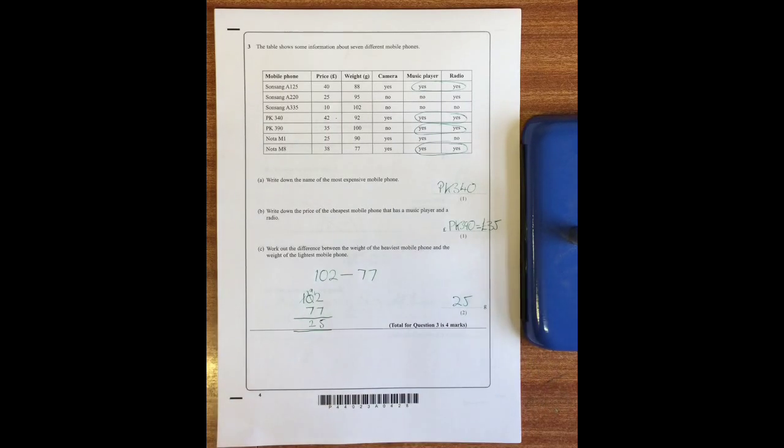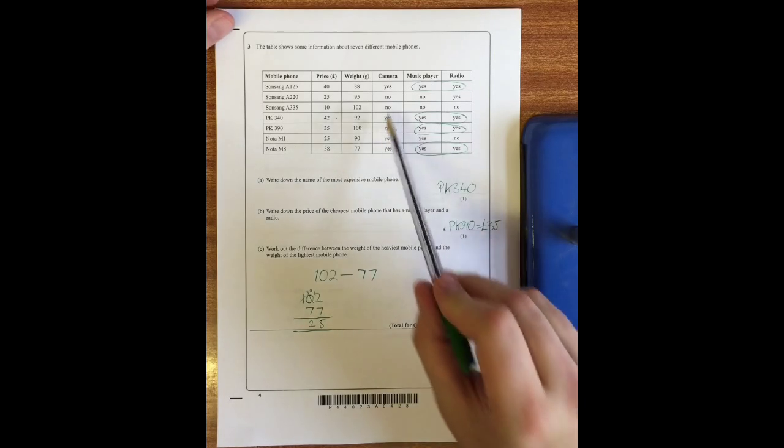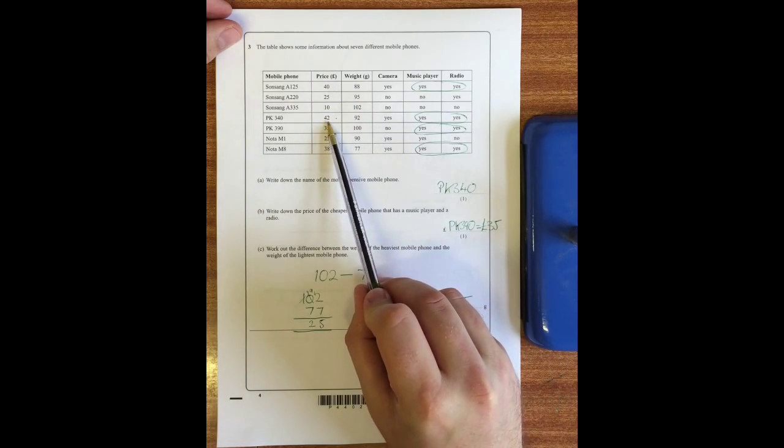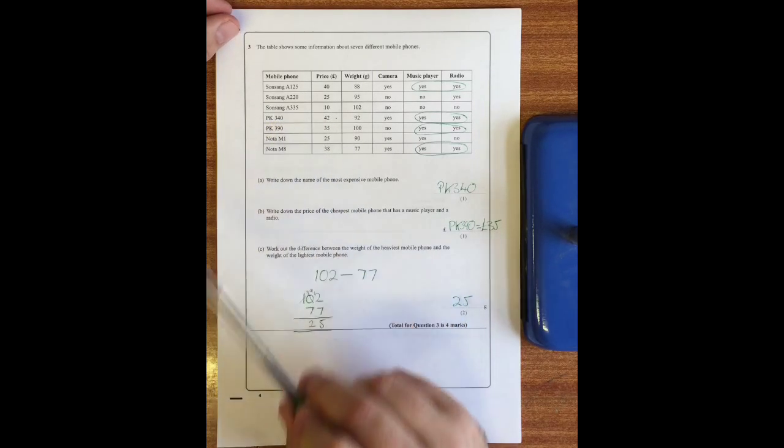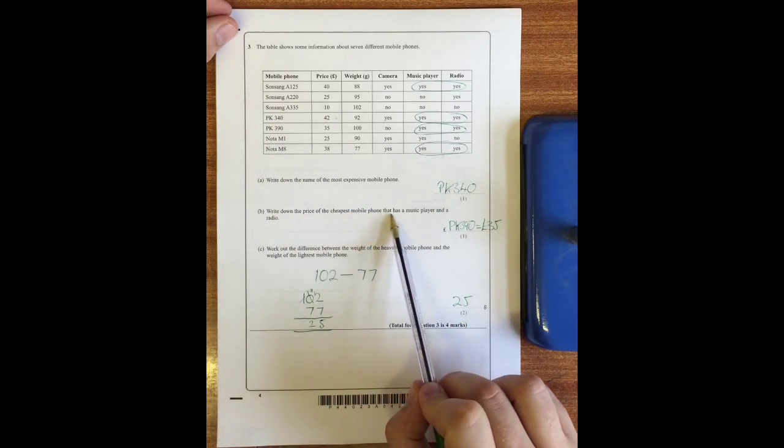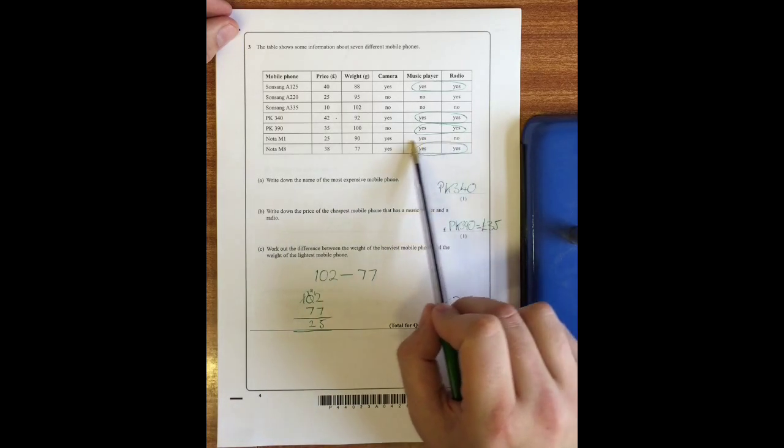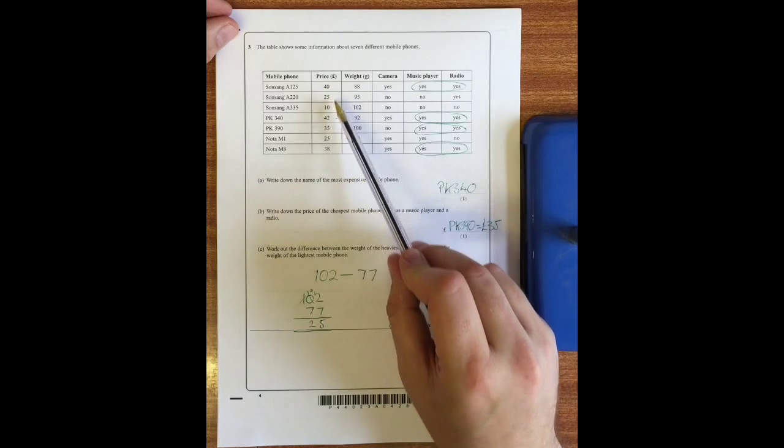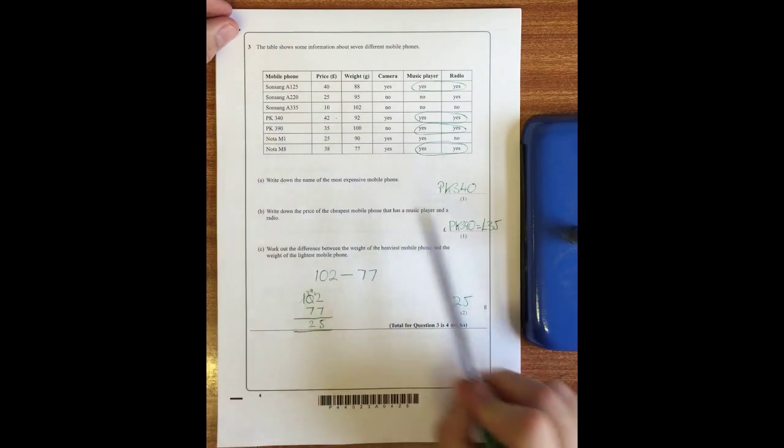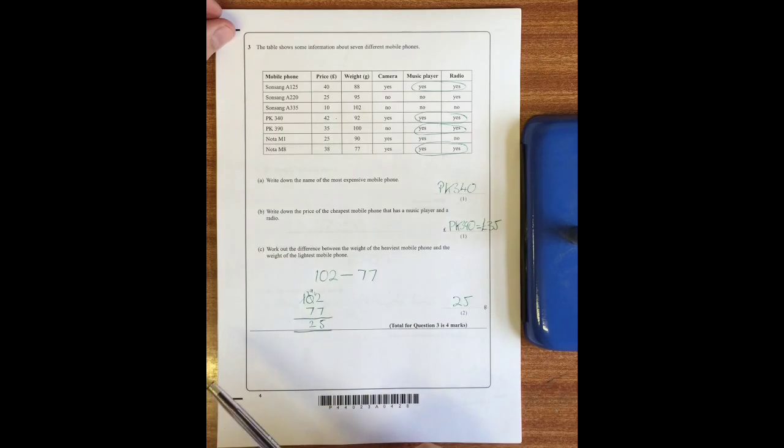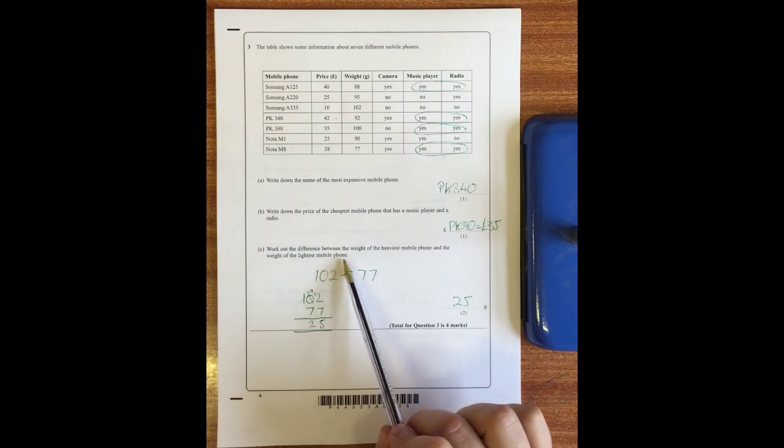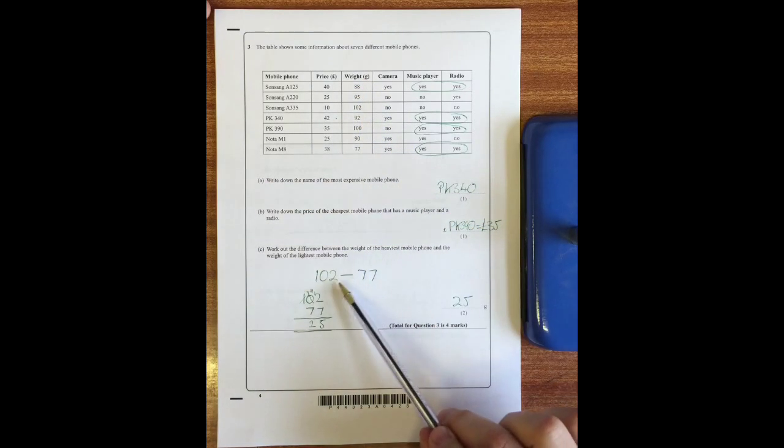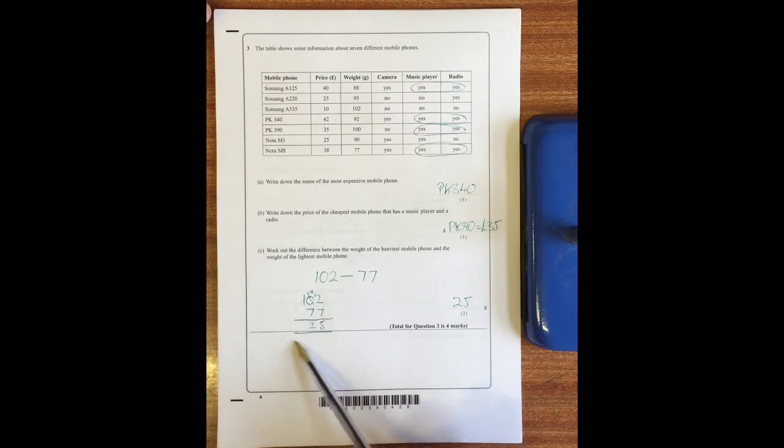Question three: the table shows some information about seven different mobile phones. Write down the name of the most expensive mobile phone. If we go down the price list we can see that 42 pounds is the most expensive, which is the PK340. Write down the price of the cheapest mobile phone that has a music player and a radio. I've circled the ones that have a music player and a radio, and you can see that the cheapest one is the PK390 which is 35 pounds. Work out the difference between the weight of the heaviest mobile phone and the weight of the lightest mobile phone. Going down the weight column we can see that the heaviest is 102 and the lightest is 77. If we take those away from each other - I've done it in a written method there but obviously it's a calculator paper - the answer is 25 grams.